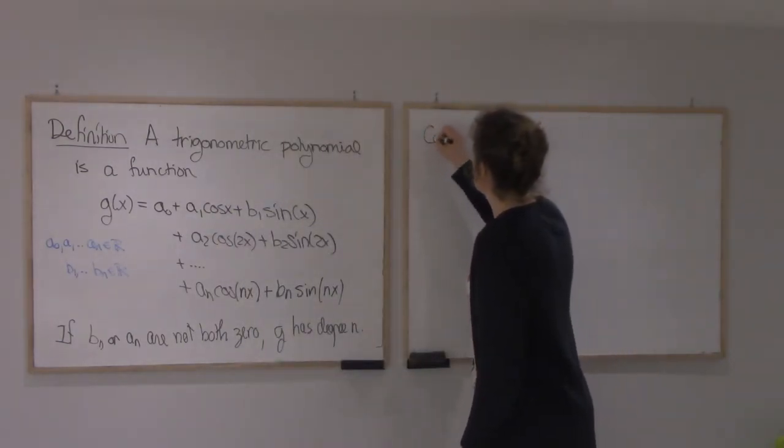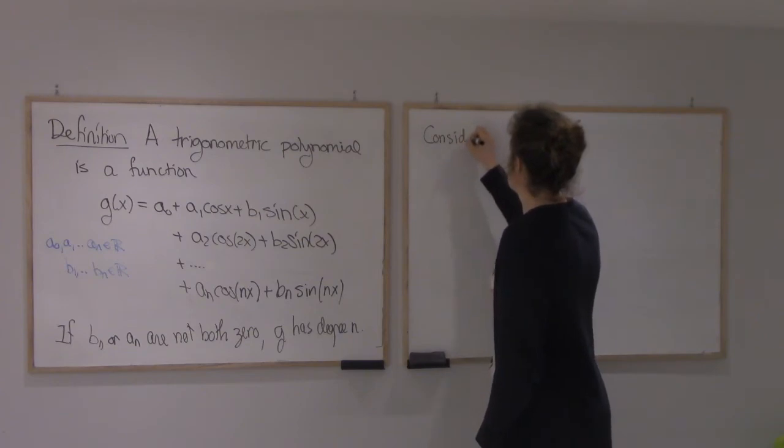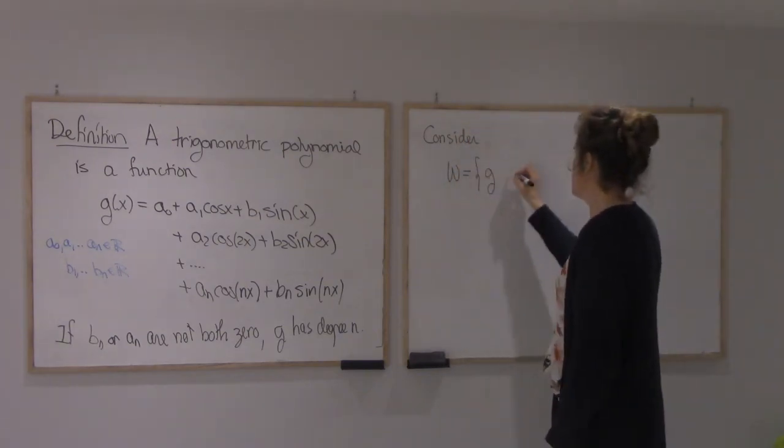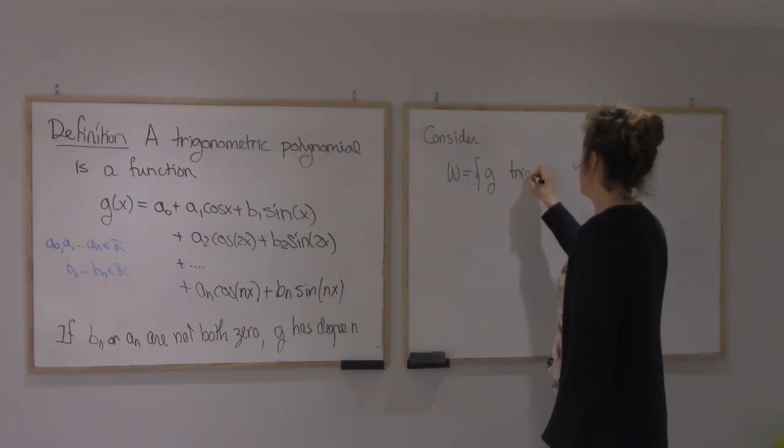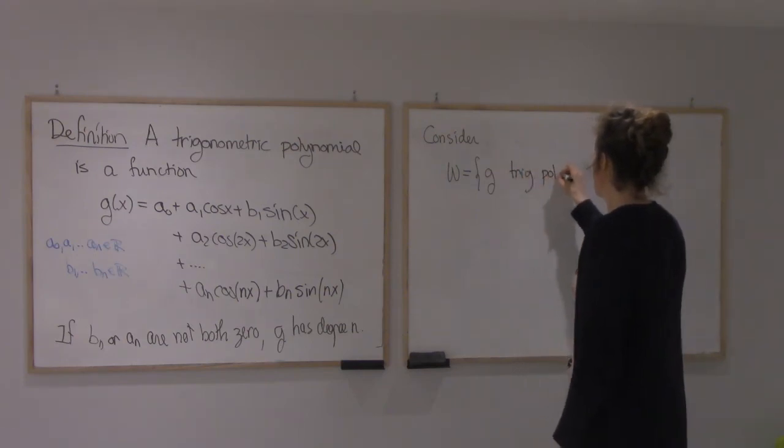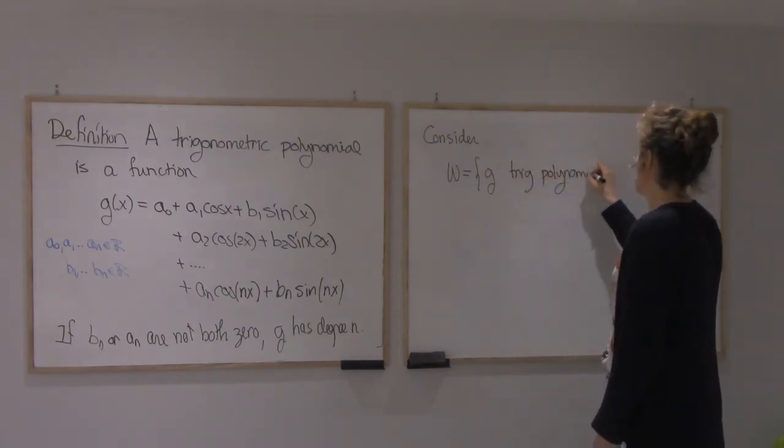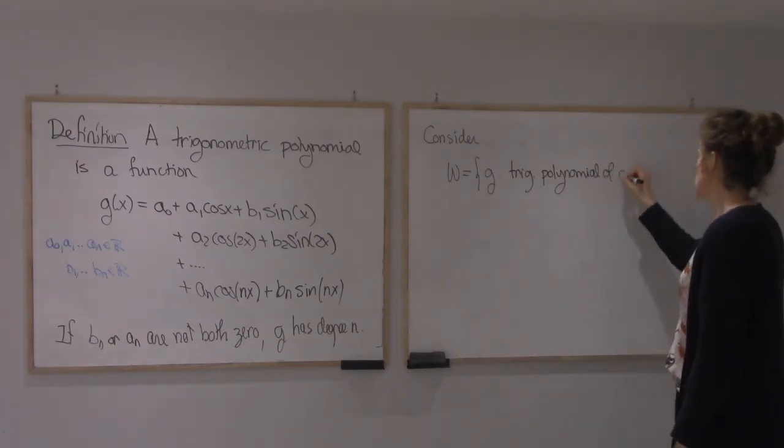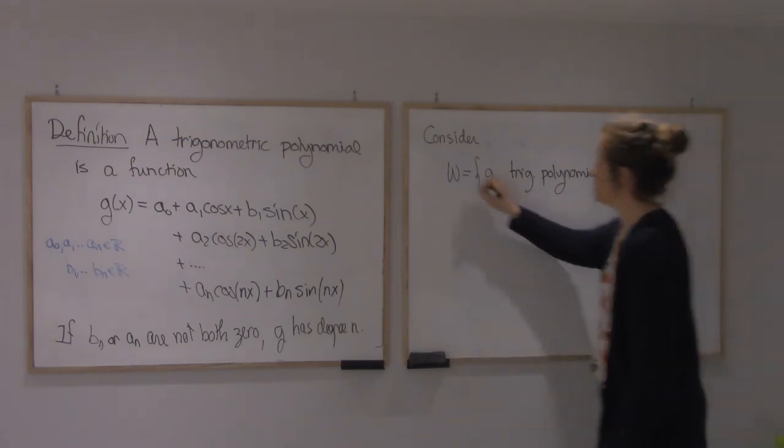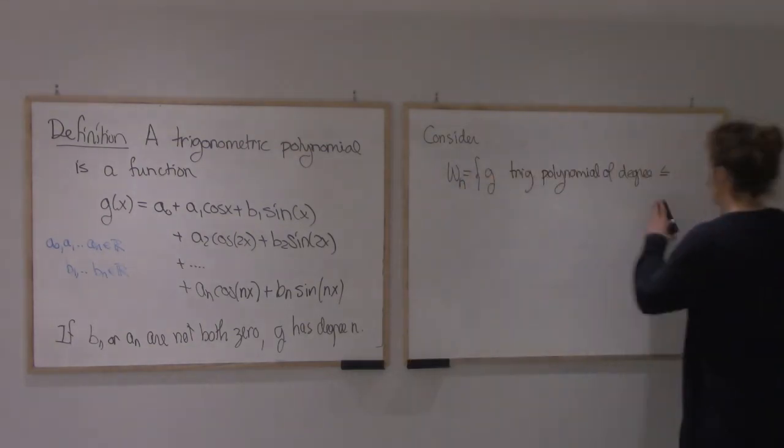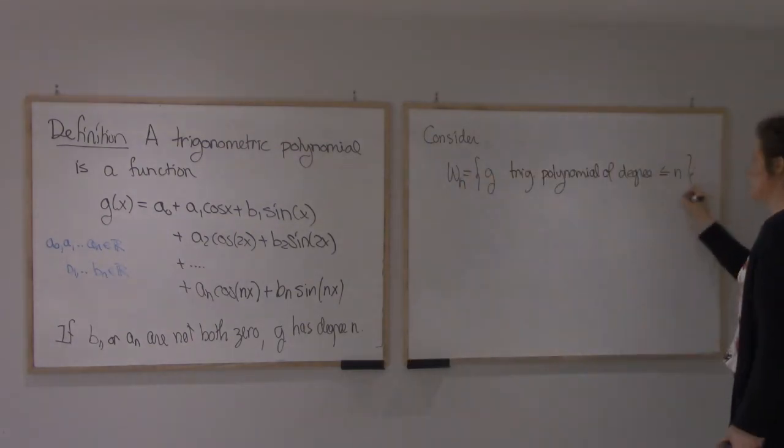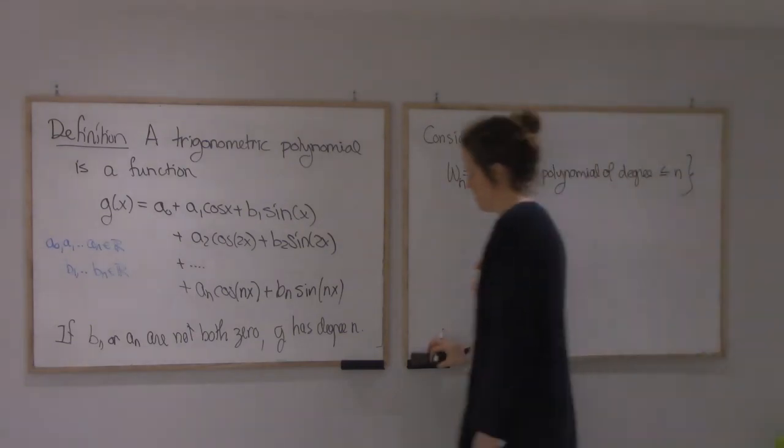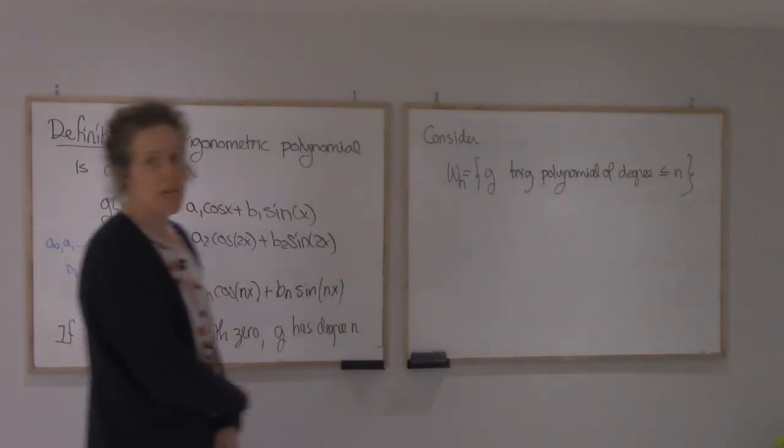Consider W, the space of G, trigonometric polynomial of degree, let's call it Wn, of degree less or equal to n. This is a subspace.